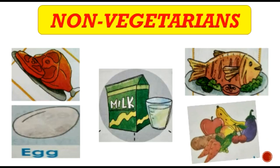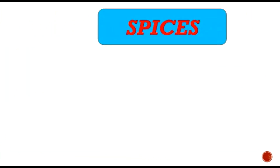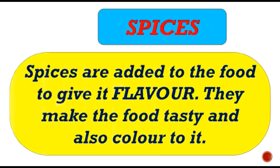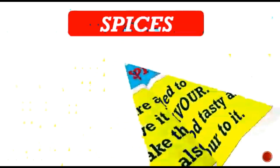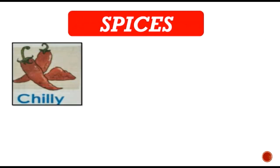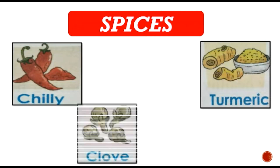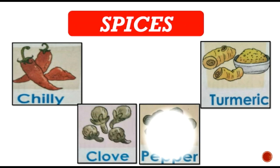Non-vegetarian people eat all these food items. Our next topic is spices. Spices are added to food to give it flavor. They make the food tasty and also add color to it. Let us have a look at some spices: chilies, turmeric, cloves, and pepper.